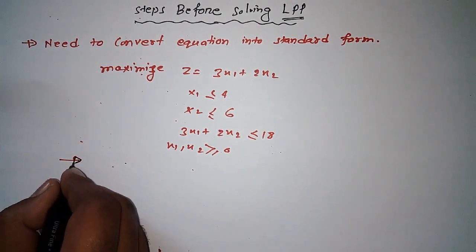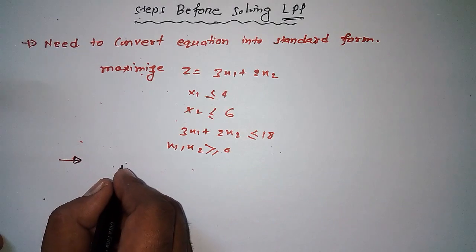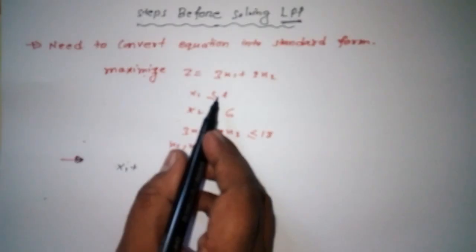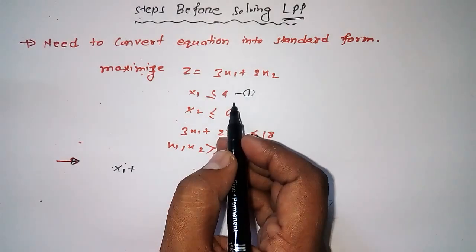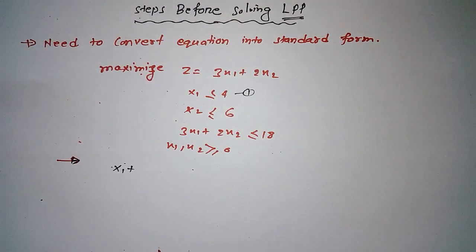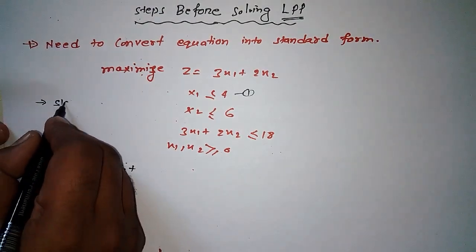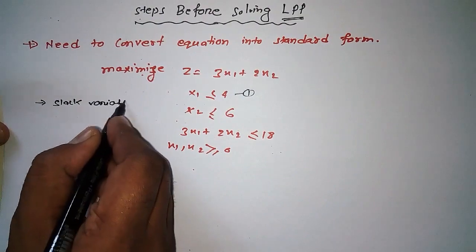So here what we got: X1 we have in this equation, X1 less than or equal to 4. That means if I will add something on this side with X1, then we can make it equivalent. So there are two things: if we want to subtract, we use surplus; if we want to add, we use slack. So all these variables are slack variables and surplus variables.